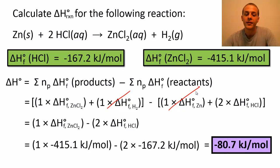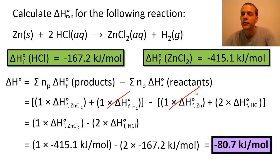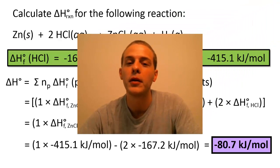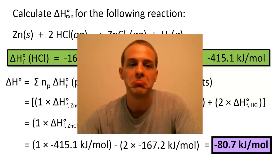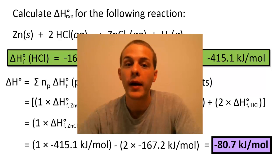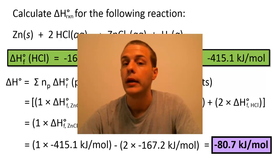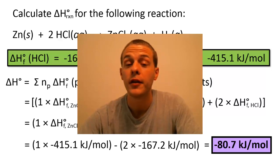So we get one times negative 415.1 kilojoules per mole, minus two times negative 167.2 kilojoules per mole, and our final result is negative 80.7 kilojoules per mole. This is an exothermic reaction — and we didn't even have to run the reaction to find that out. I always think that's pretty amazing, where you just do a little bit of calculation, look a couple things up in a book, and you're where you want to be. Alright, I hope this video was helpful. Stay tuned for more videos and, as always, have a good day.